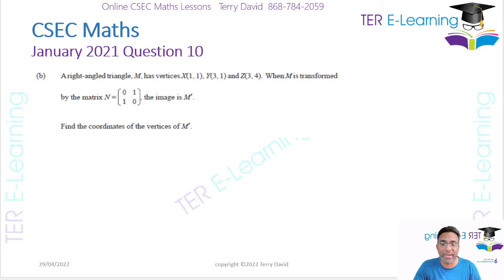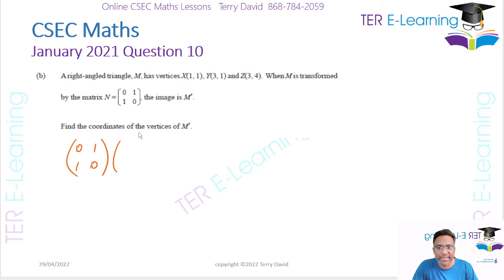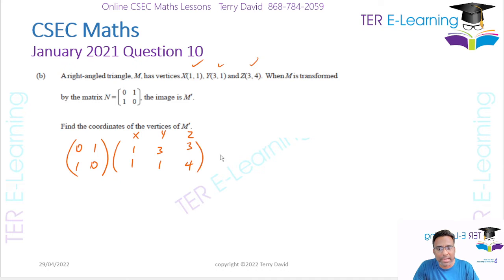The next part — we have a right angle triangle with vertices X, Y, Z. When the triangle is transformed by matrix N = [0, 1; 1, 0], we find image M prime. We write each coordinate as a column vector: X=(1,1), Y=(3,1), Z=(3,4), and multiply each by matrix N.